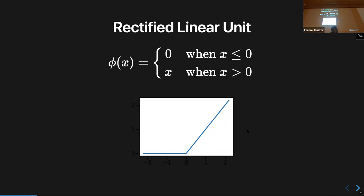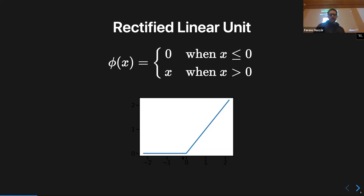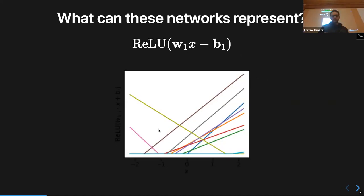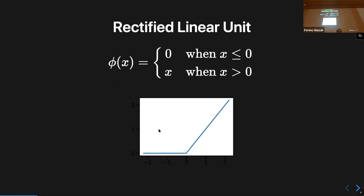The typical non-linearity we use these days is the Rectified Linear Unit (ReLU). It's very simple: for anything under zero it returns zero, and for anything bigger than zero it returns the number itself — identity. So if this is the type of non-linearity used in this architecture, what flavor of functions will we be able to implement? Is it smooth functions, differentiable functions, convex functions, symmetric functions?